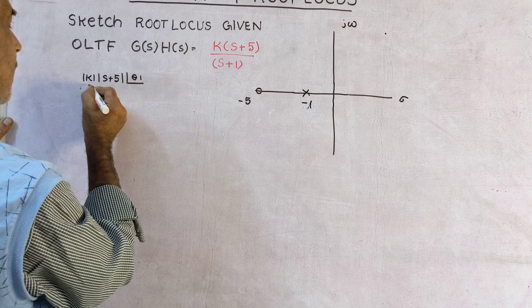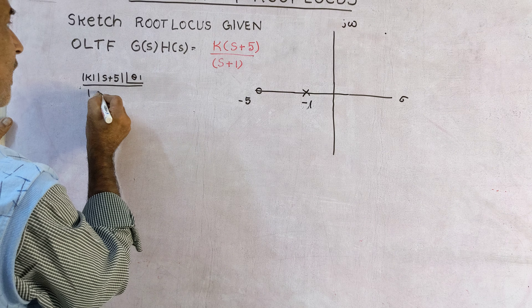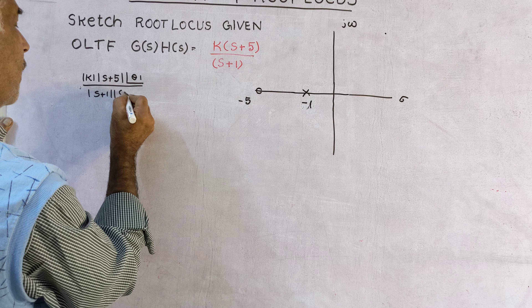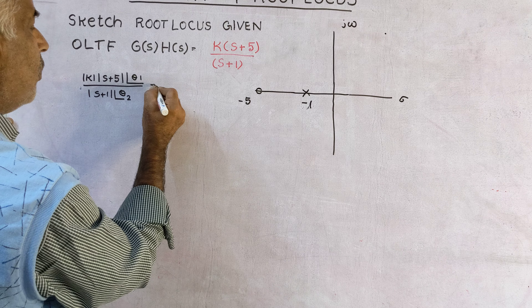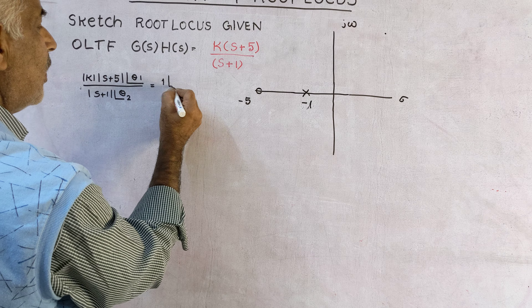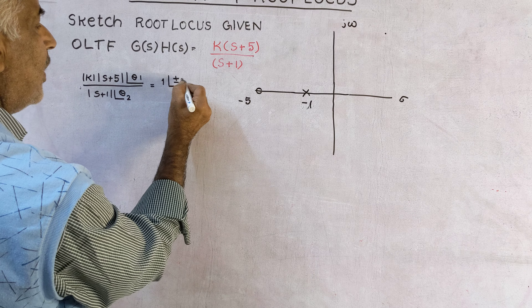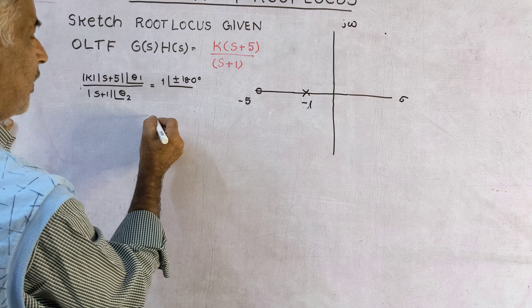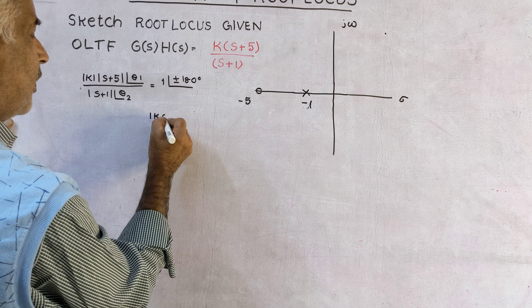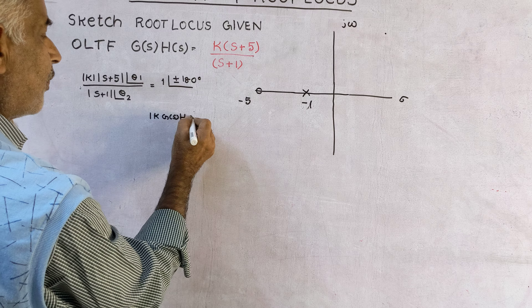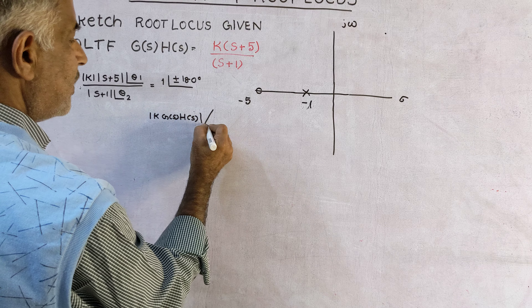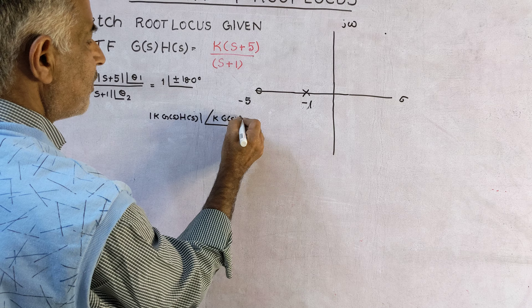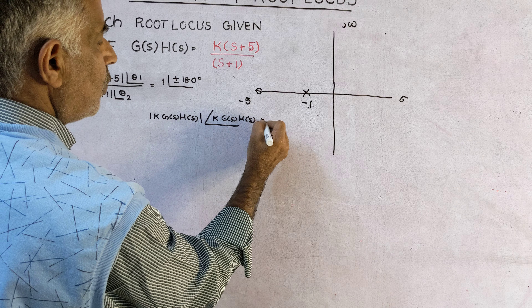The pole is at s equal to minus 1, and there is a zero at s equal to minus 5.